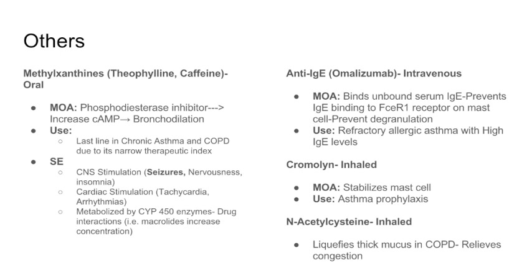Now for miscellaneous agents. The first is methylxanthines — theophylline is the prototype, but caffeine is also in this class. They work as phosphodiesterase inhibitors. Cyclic AMP is broken down by phosphodiesterase, so inhibiting this enzyme with theophylline increases cyclic AMP, causing bronchodilation. Theophylline is last-line in chronic asthma and COPD because it has many side effects and is difficult to dose — it has a narrow therapeutic index, meaning the difference between safe and toxic levels is very small.